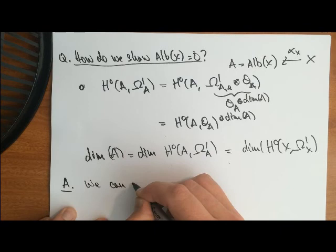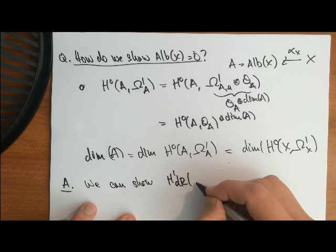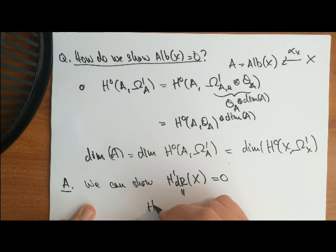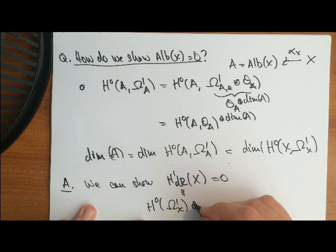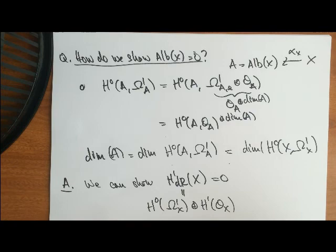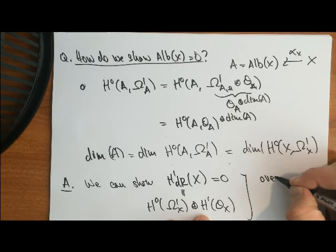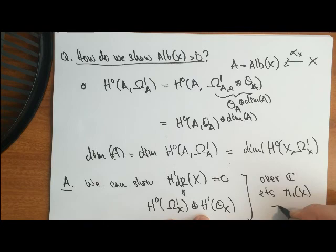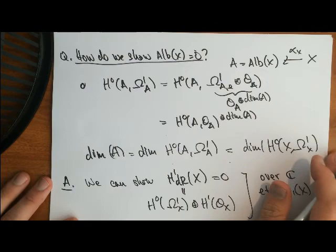So it's enough to show that H¹_deRham(X) is zero. This has two pieces: h⁰(Ω¹_X) and h¹(O_X). Over the complex numbers, it's also enough to show that π₁(X) is zero — that the fundamental group is trivial. If you have a simply connected variety, then the Albanese is trivial. This is the strategy for showing that part.